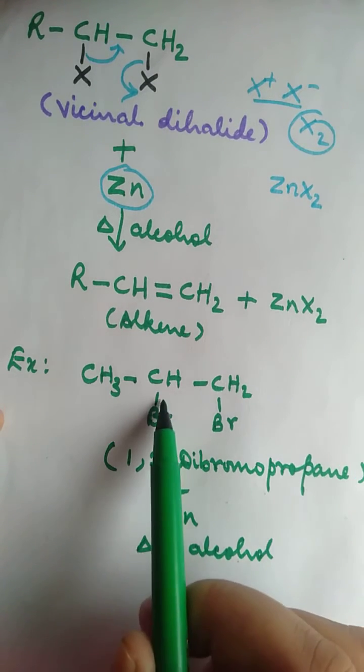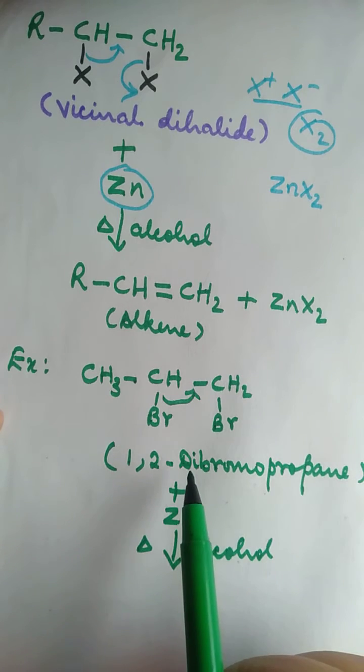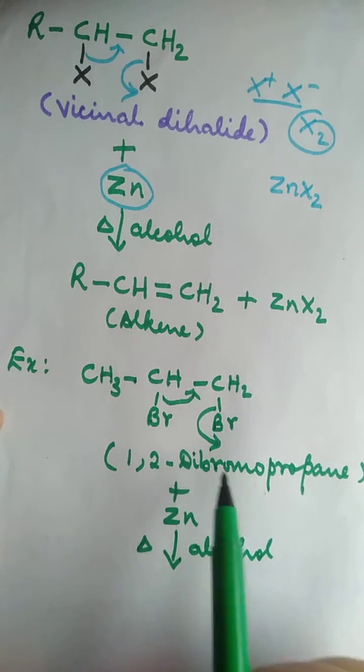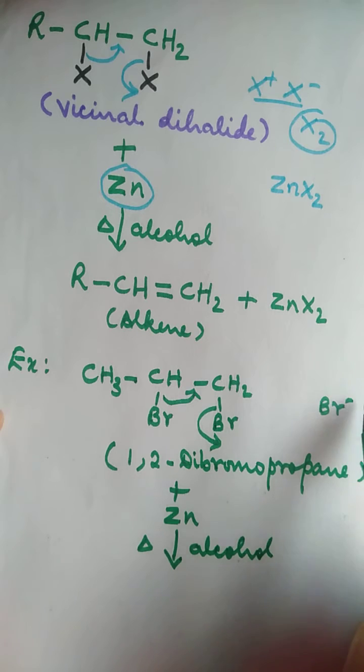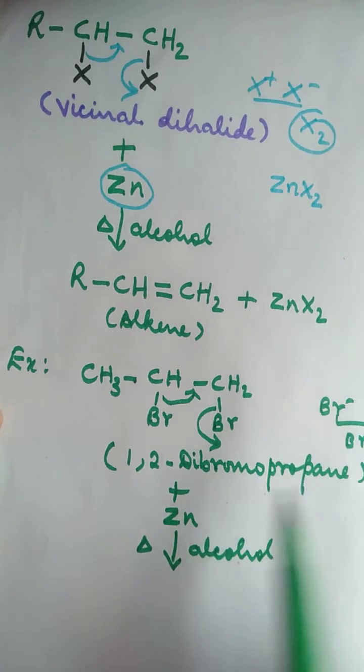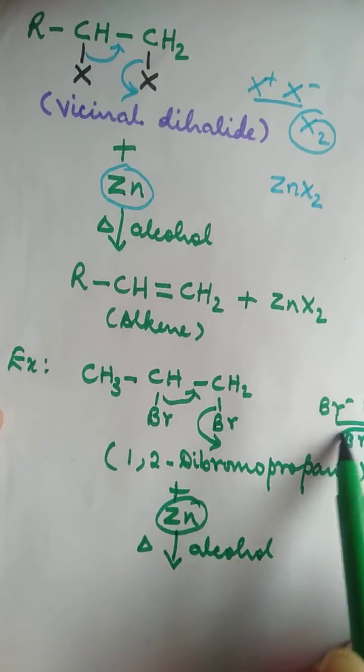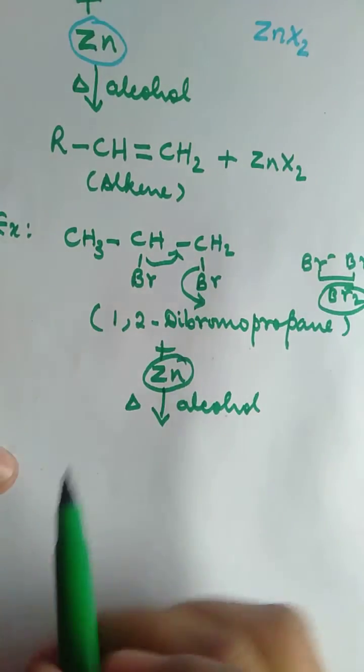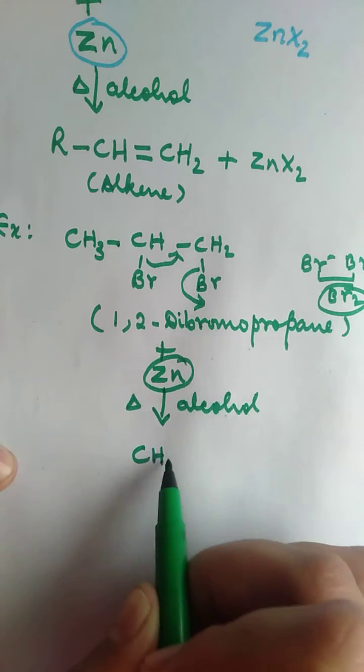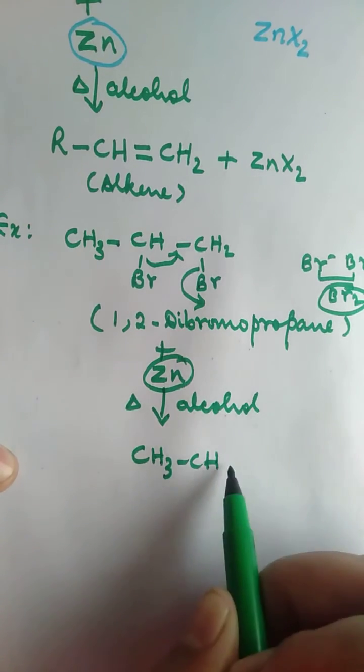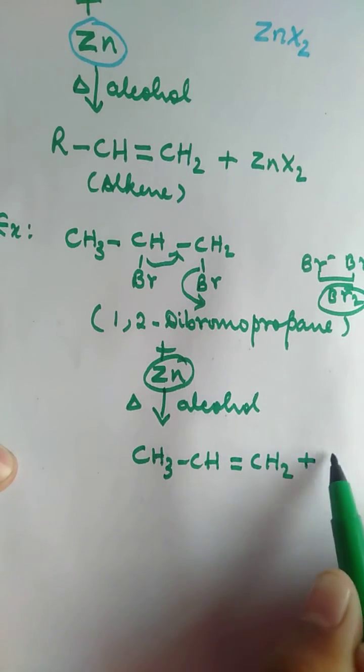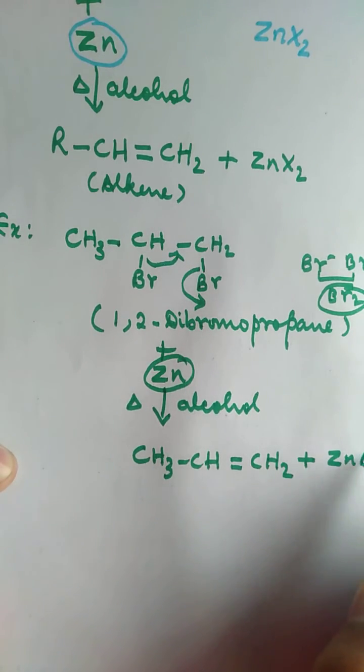Then in the same way, it forms a double bond here. This one goes out as Br-, we get Br-, Br+. These two give Br2. This one reacts with this. So we have CH3-CH double bond CH2 plus zinc bromide.